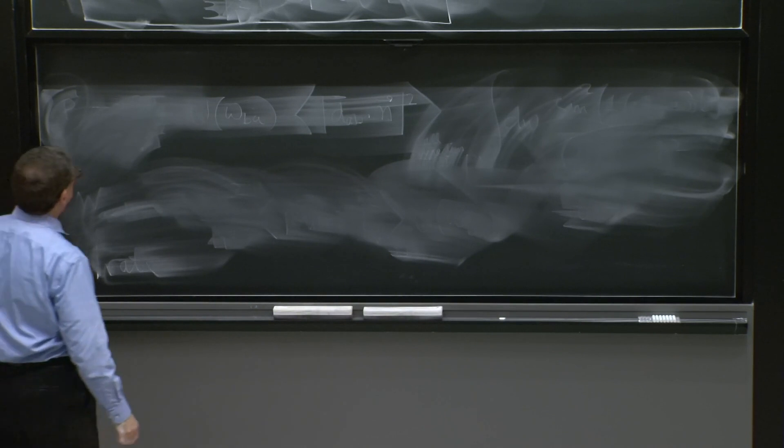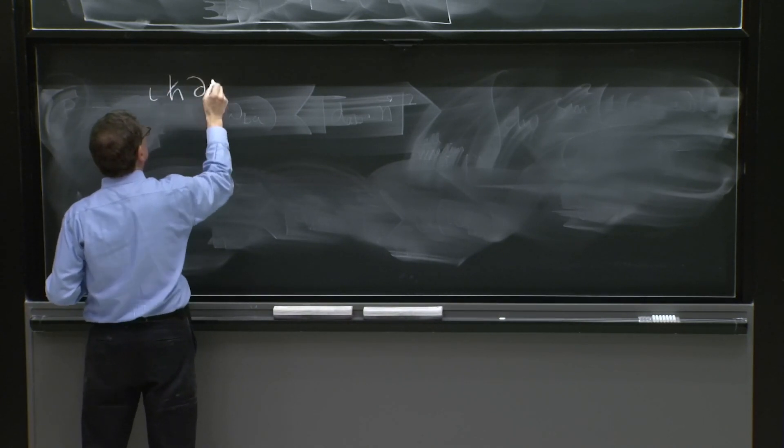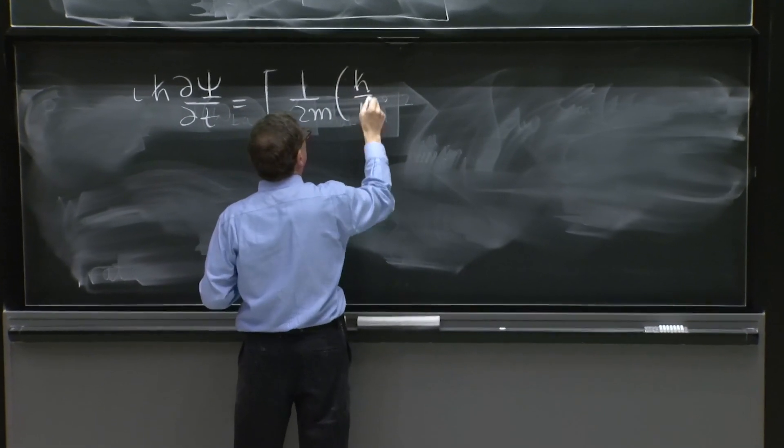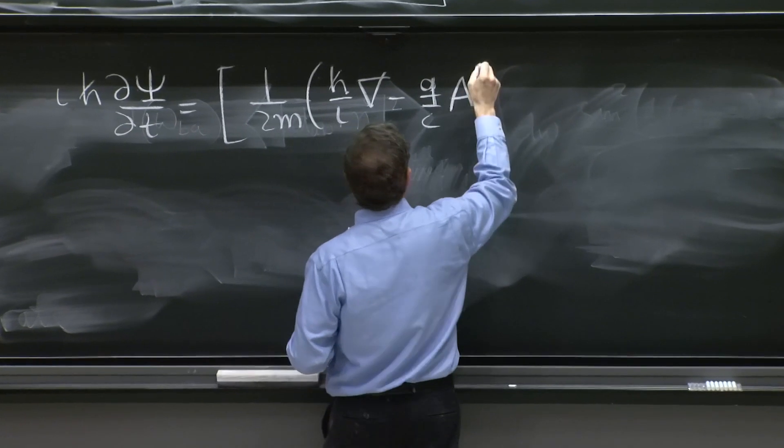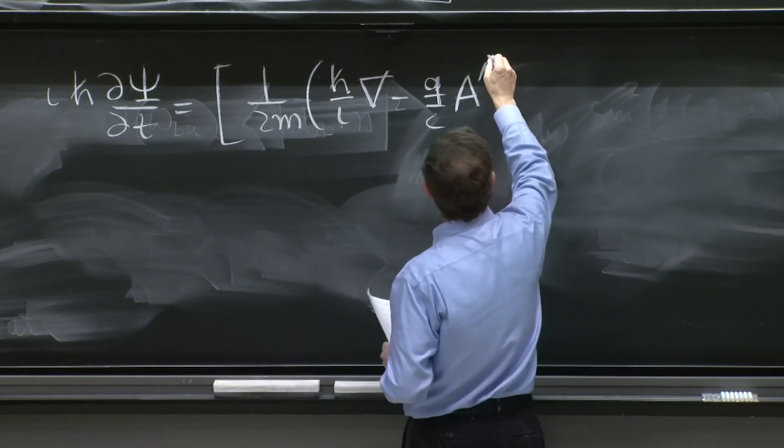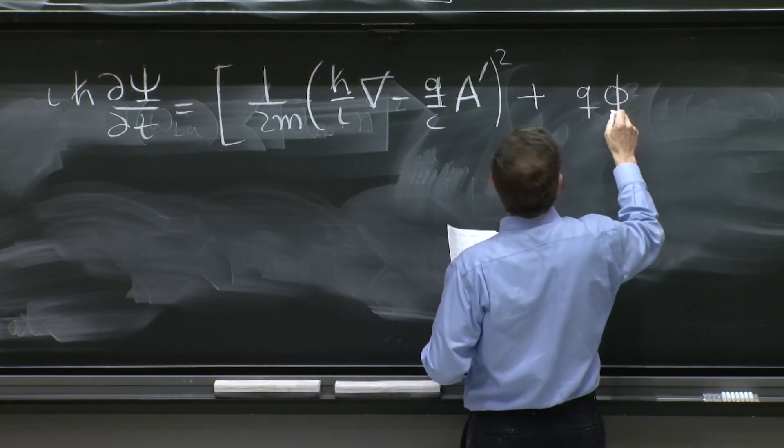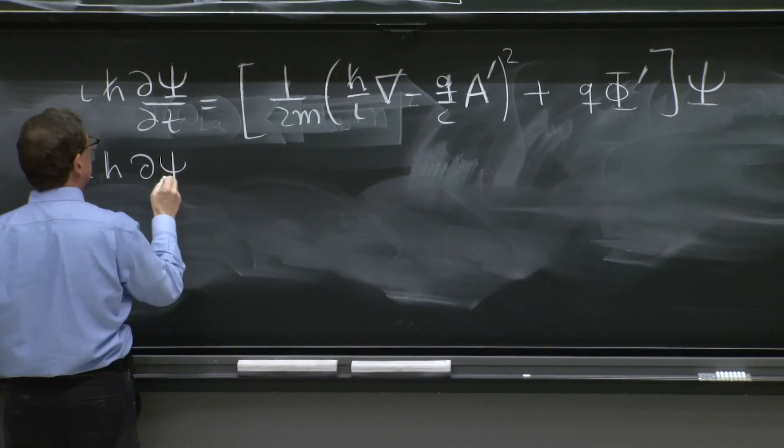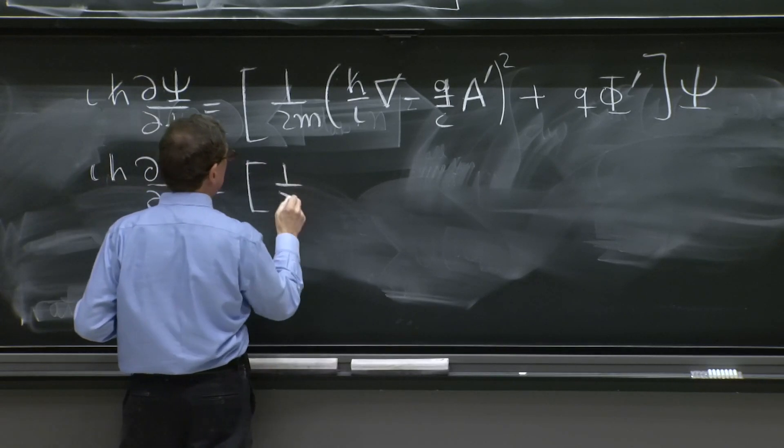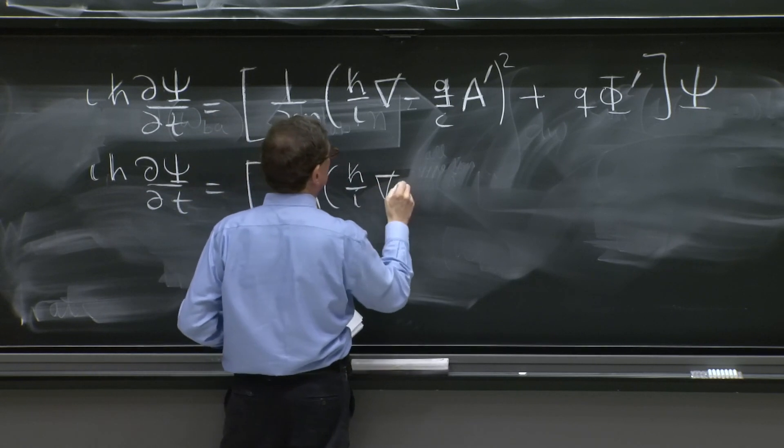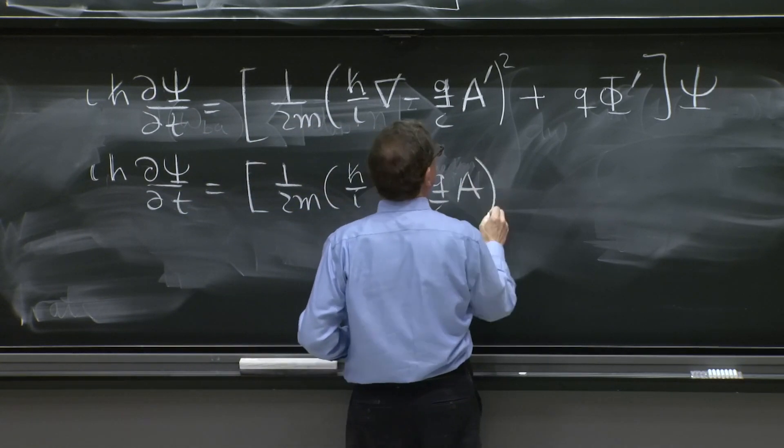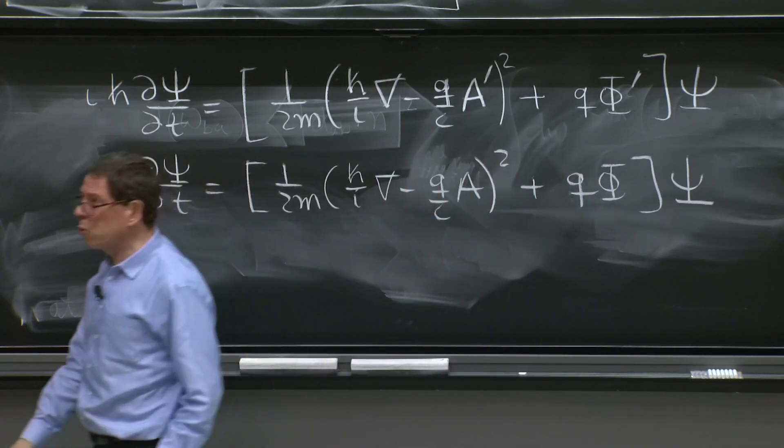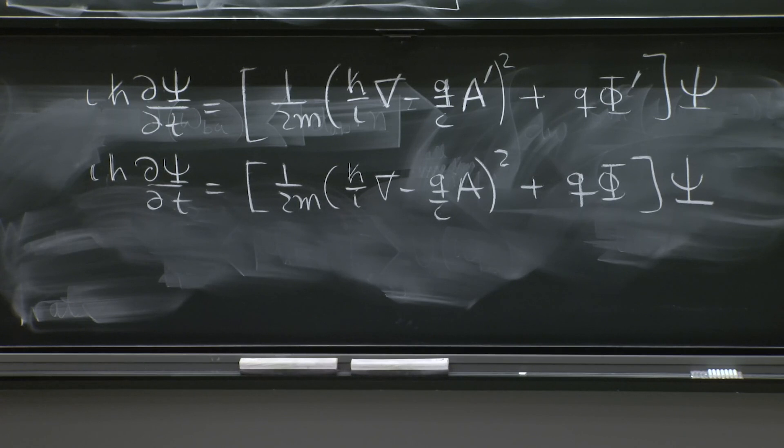So I will say it this way. Suppose you solve the Schrödinger equation with ℏ/i ∇ minus q over c with the new potentials plus q. So you solve the Schrödinger equation with the old potentials. So you have here the two Schrödinger equations, one with the new potentials, one with the old potentials.